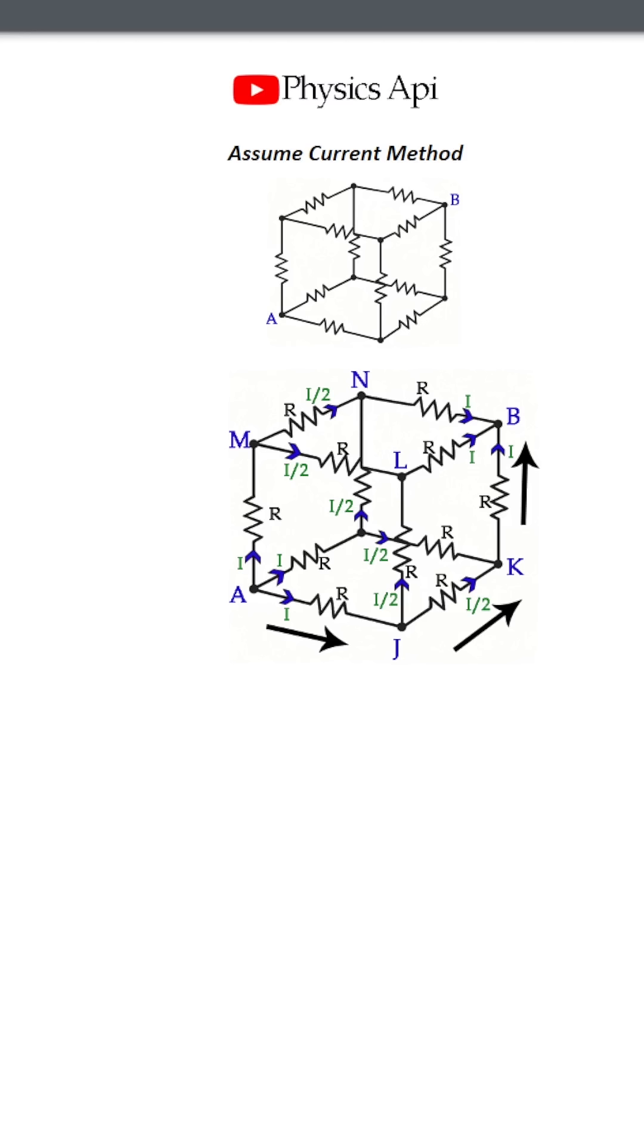We send current from point A to point B, which are diagonally opposite corners of the cube. At point A, we assume a total current of 3I enters the cube. This current splits equally into three outgoing paths, so each path carries I.